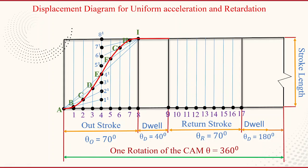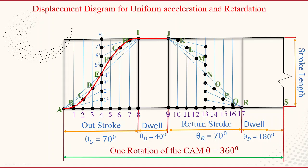For the return stroke, the follower moves with uniform retardation. Again, take the middle of the return stroke divisions at point 13 and divide that line into eight equal parts. The left top corner is joined to the first half of the points and the right bottom corner is joined to the remaining half, similar to the outstroke construction. Then mark the intersection points for 10 and 10 prime, 11 and 11 prime, 12 and 12 prime, 13 and 13 prime, 14 and 14 prime, 15 and 15 prime, 16 and 16 prime. Join all intersection points with a smooth curve to obtain the displacement curve during the return stroke.